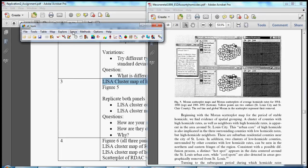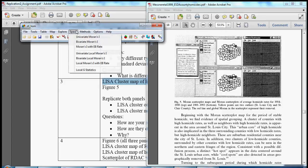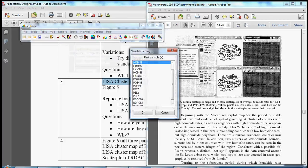So let's generate our LISA cluster map. We go to space, go down to the fourth option, univariate local Moran's I. And we want to pull up 84-88 as our variable of interest.